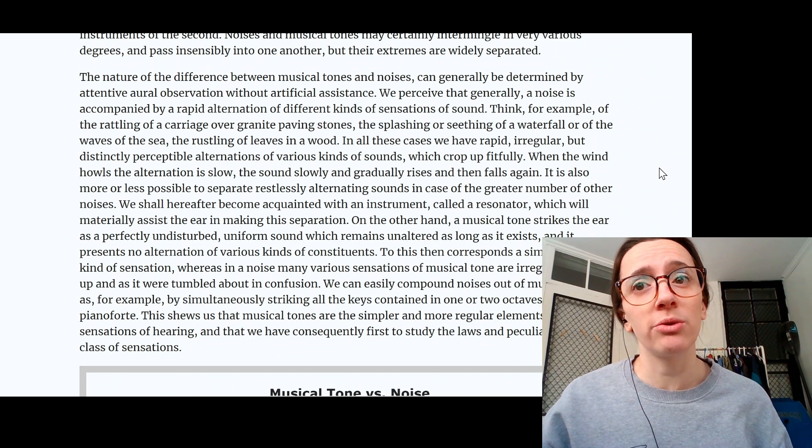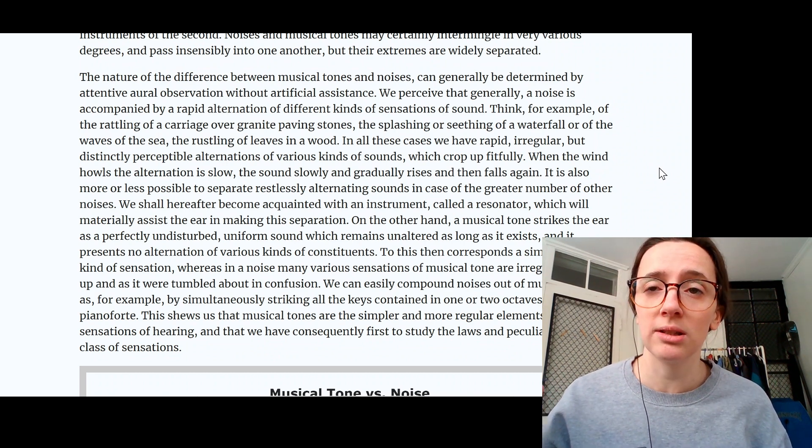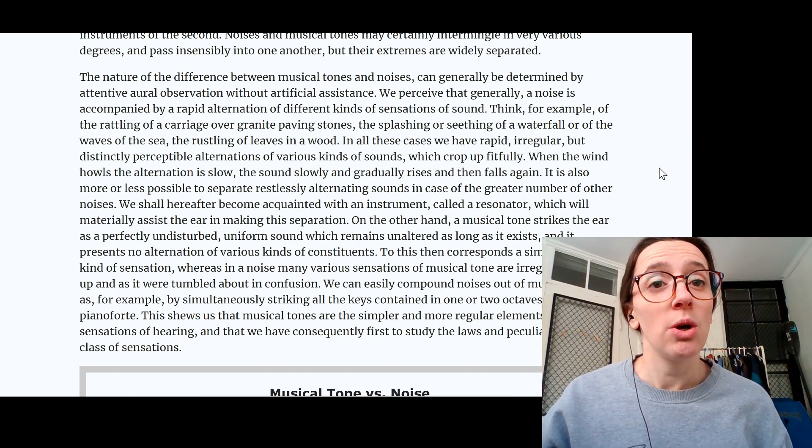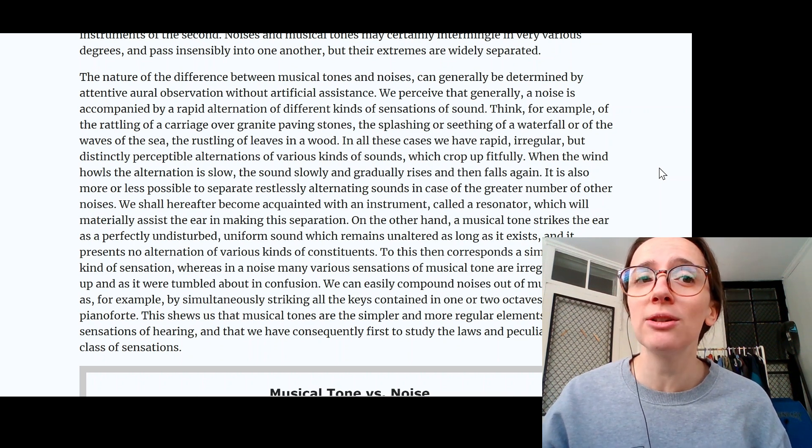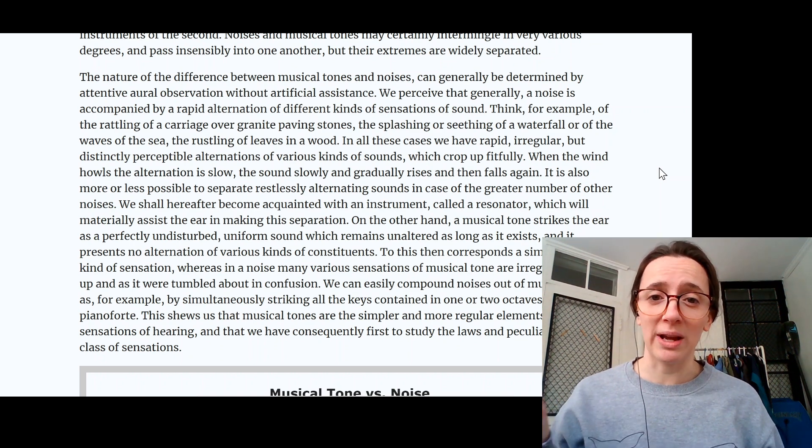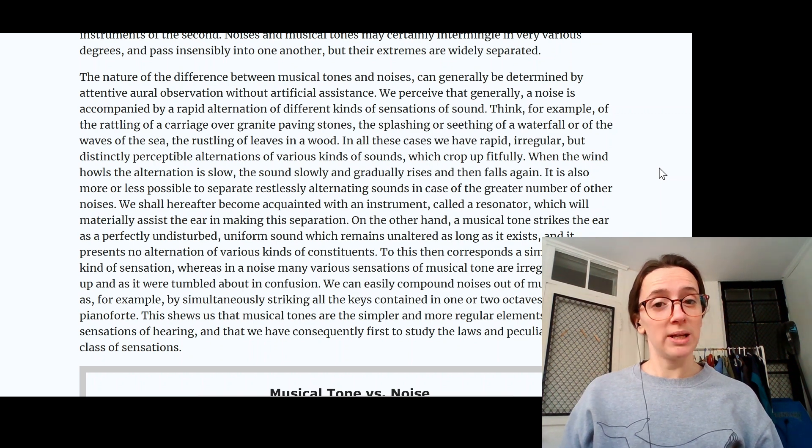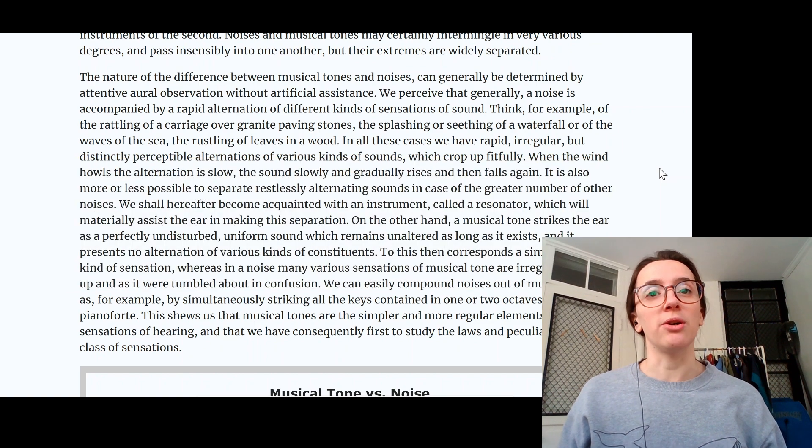On the other hand, a musical tone strikes the ear as a perfectly undisturbed uniform sound. A musical tone is a simple, regular kind of sensation, whereas in a noise, many various sensations of musical tone are irregularly mixed up. You can actually see this pretty easily if you look at the waveforms of different sounds. I'm going to show you the waveform of a noise, and the waveform of a musical tone.